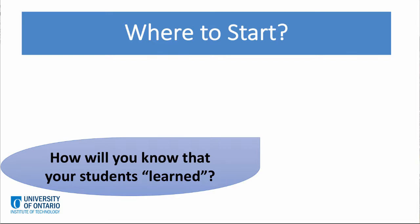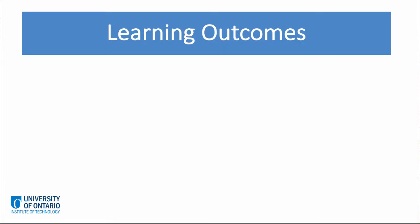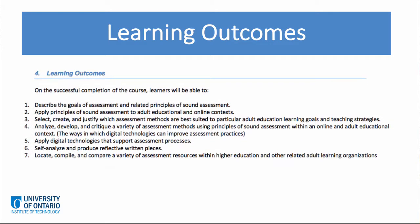It may seem strange at first, but we actually start at the end. Similar to when designing instruction, we look to the learning outcomes when designing assessment. Learning outcomes appear near the beginning of a course syllabus. These are the learning outcomes for this course, and they appear on the second page of the syllabus. All instruction provided in a course aligns with at least one learning outcome. Similarly, all assessments must align with the learning outcomes. Learning outcomes articulate the knowledge and skills learners will acquire upon successful completion of the course. So that is why we start at the end.